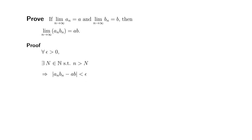First I'm going to erase the less than epsilon part because we haven't really established that yet. And I'm going to make a copy and give a little extra room so we can add a couple of terms. Here's a trick: I'm going to subtract aₙ times b and add aₙ times b. Since I'm subtracting and adding the same thing, we're not really changing anything, so we still have equality.